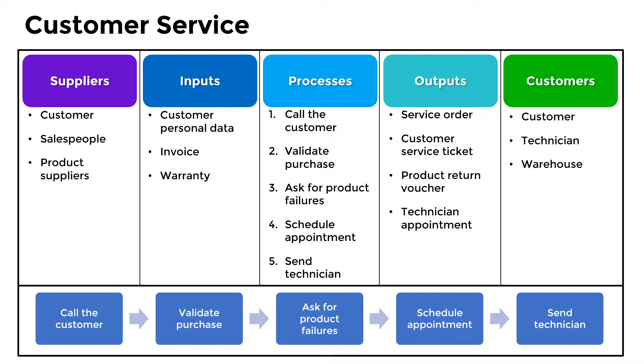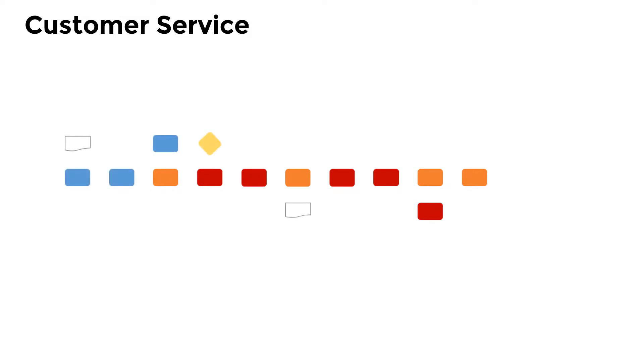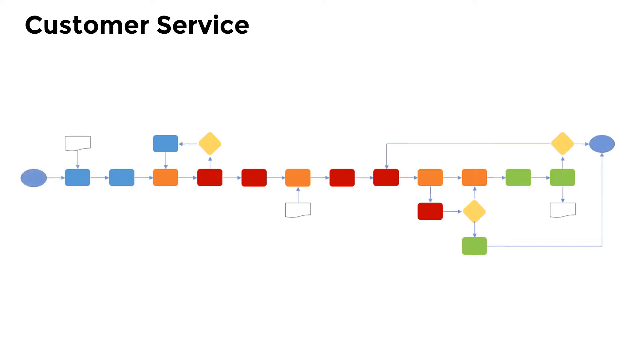With this diagram, it will be much easier to design the customer service process, because we will have plotted, at the general level, the key activities of the process. In addition, we will know the supplies that the process requires, and we will be able to specify how we will obtain them. Also, by having clarity about the outputs and the users who will receive them, we will be able to define more effective activities.